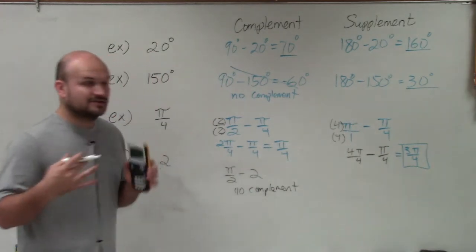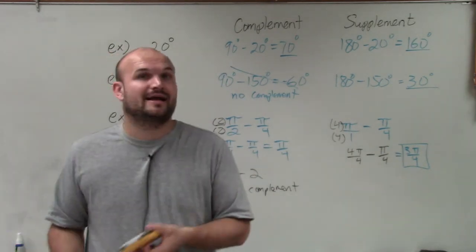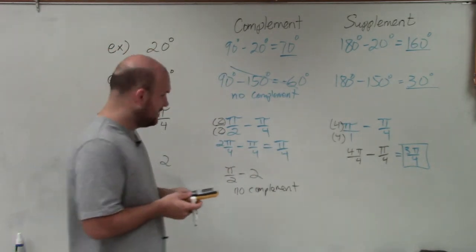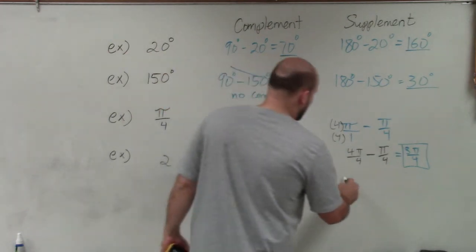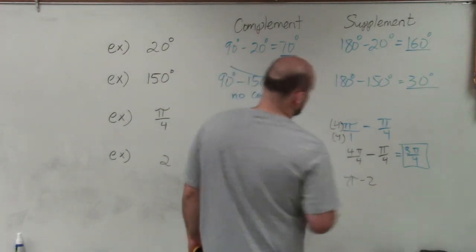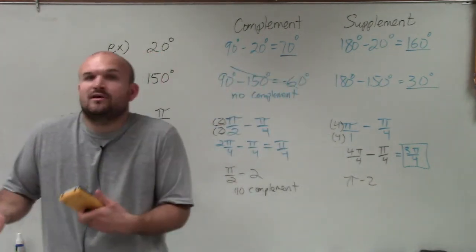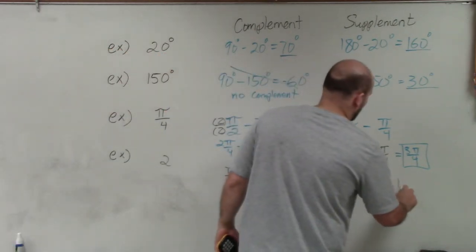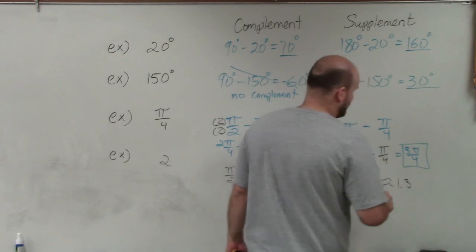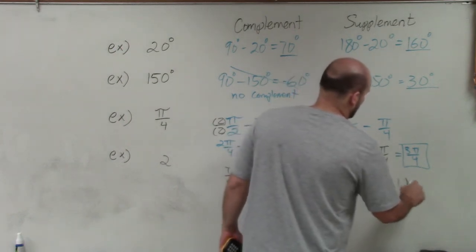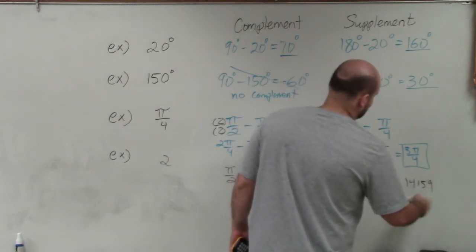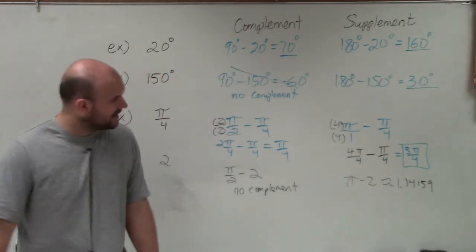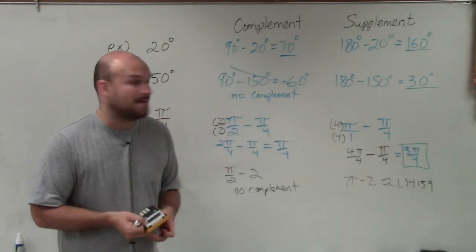Whenever you're trying to find a complement or a supplement and you have a negative number, it does not exist. Then if I do π minus 2, well I know π is 3.14, right? So if I subtract 2, I'm going to get 1.14159, dot dot dot, keeps on going forever. But therefore I can at least approximate for that.